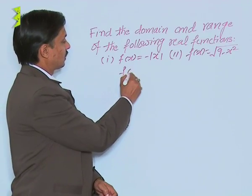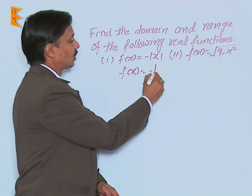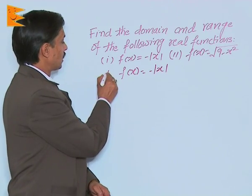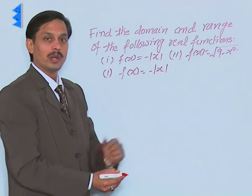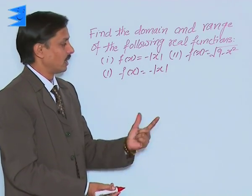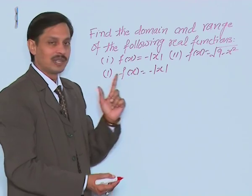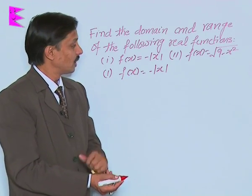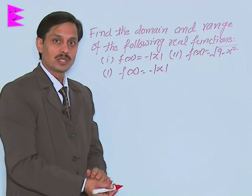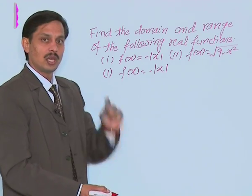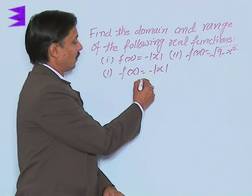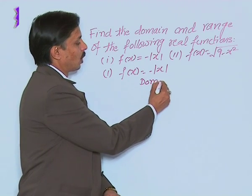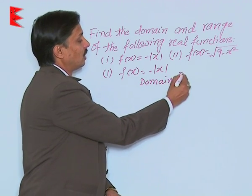Simply, f(x) equals minus mod x. First, I'll discuss with you: first there is no denominator, so we can rule out that possibility that denominator should not be zero. Second, there is no square root sign. If these two things are not present, it means we have to take the domain of the problem as any real value.